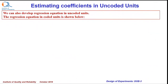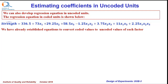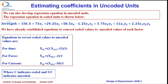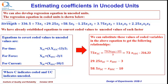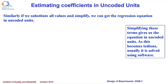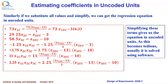We can also develop a regression equation in uncoded units. The regression equation in coded units is shown below. We have already established equations to convert coded values to uncoded values for each factor, where C indicates coded and UC indicates uncoded values. We can substitute these values of coded variables in the above equation to get the following relationships. If we substitute all values and simplify, we can get the regression equation in uncoded units. As this can become tedious, usually it is solved using software.